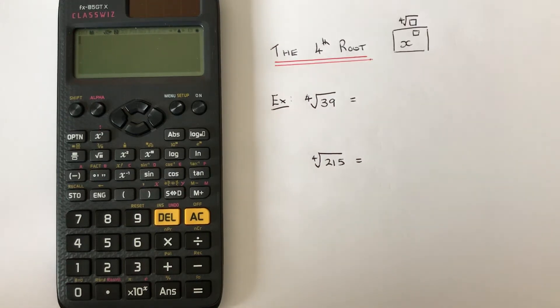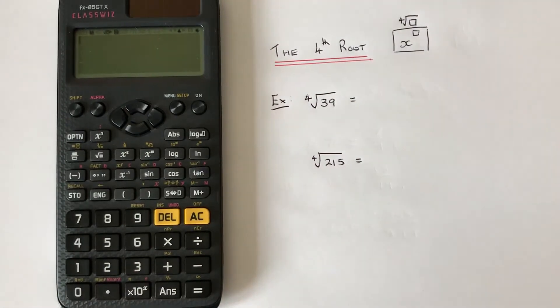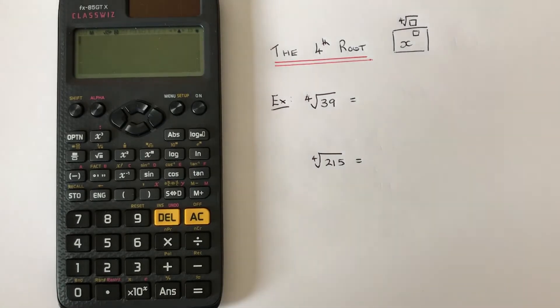Hi guys, welcome back. Today I'm going to show you how to work out the fourth root of a number using a Casio scientific ClassWiz calculator. To do this, we need to use the fourth root key.